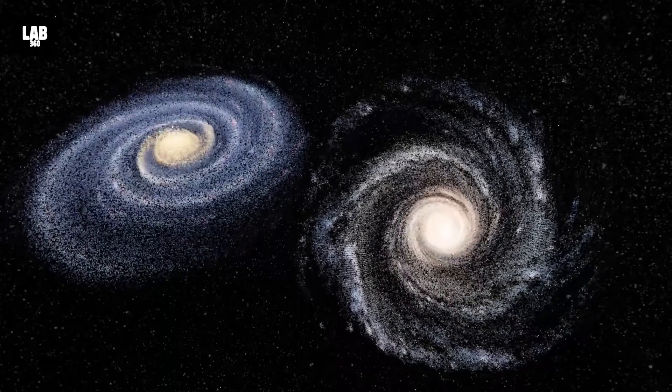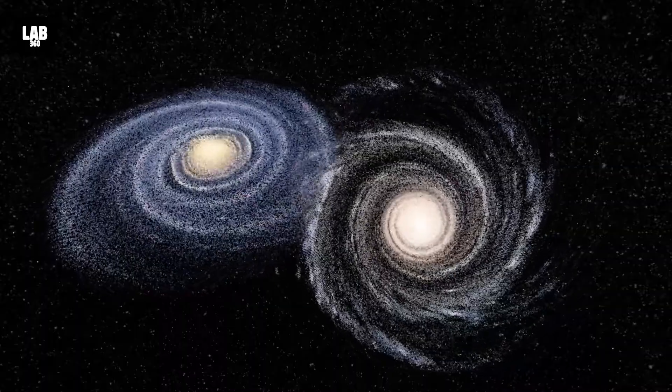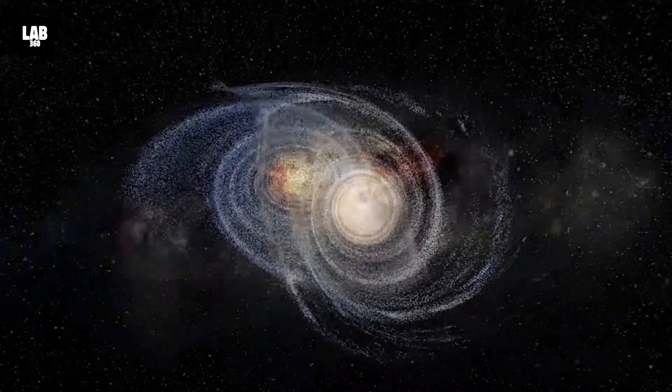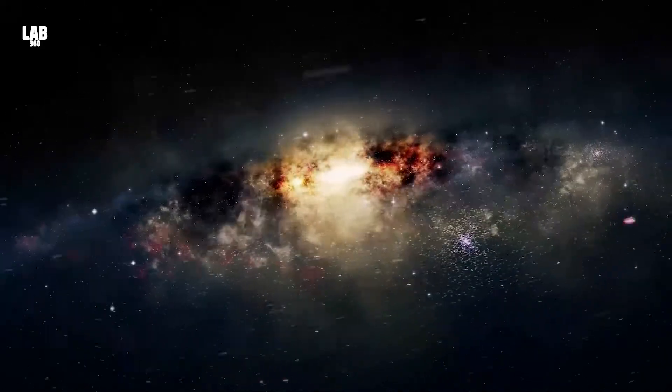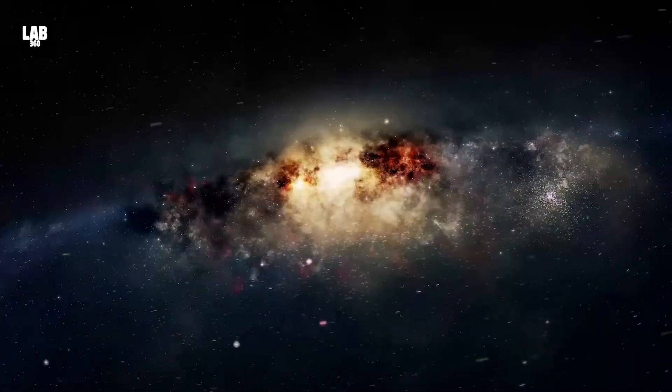The scientists' models say that the final galaxy resulting from the merger of Andromeda and Milky Way would be an elliptical galaxy without the beautiful spiral arms both the galaxies now possess.